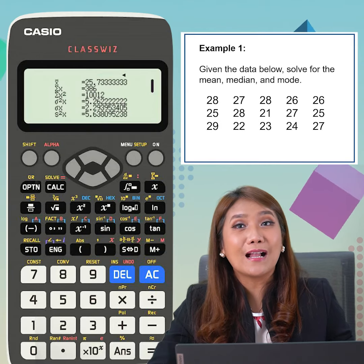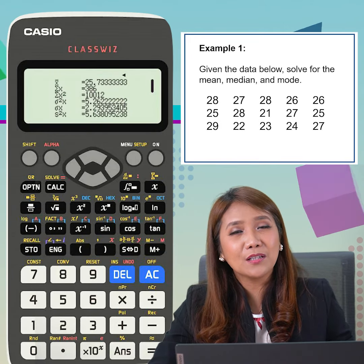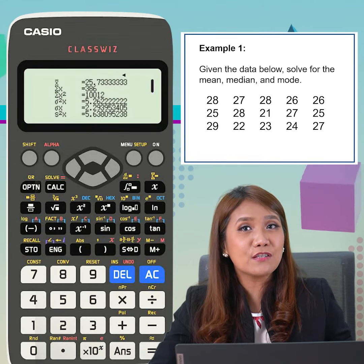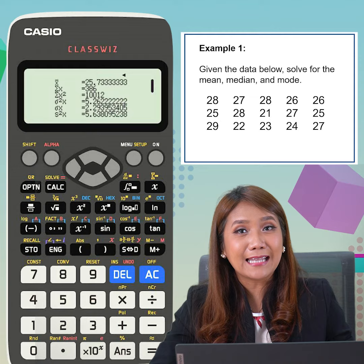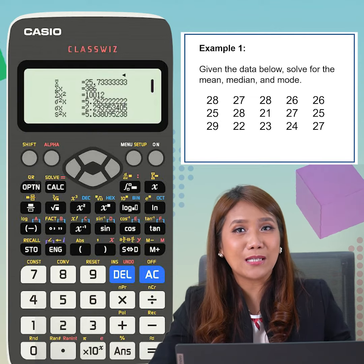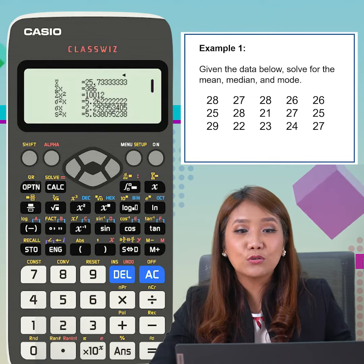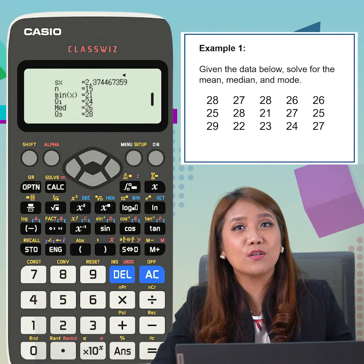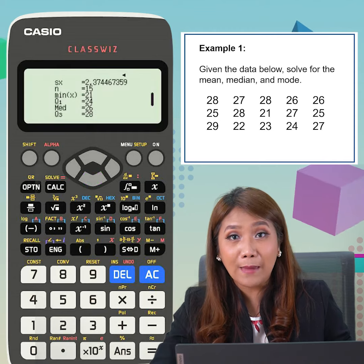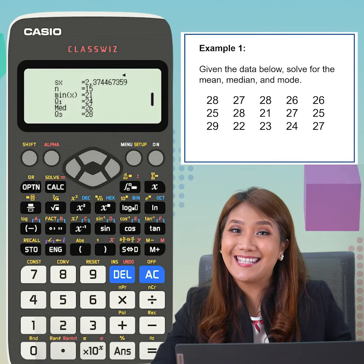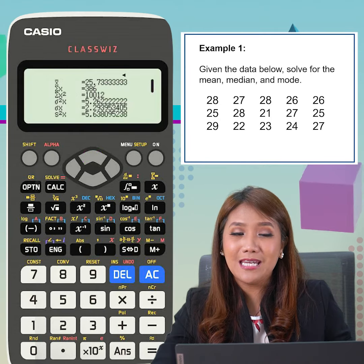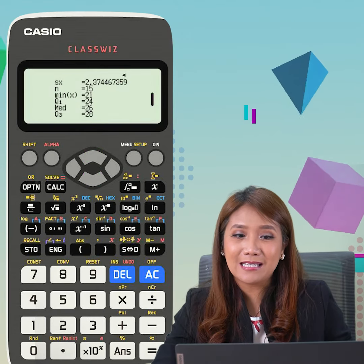We need all the values that we have here, but we're only going to consider two values. That would be the mean, which is the first value with the label X-bar — that means the mean is 25.7. Now, to find the median, we need to click on arrow down and look for the median, which is the fifth value with label Med. And the median is 26.